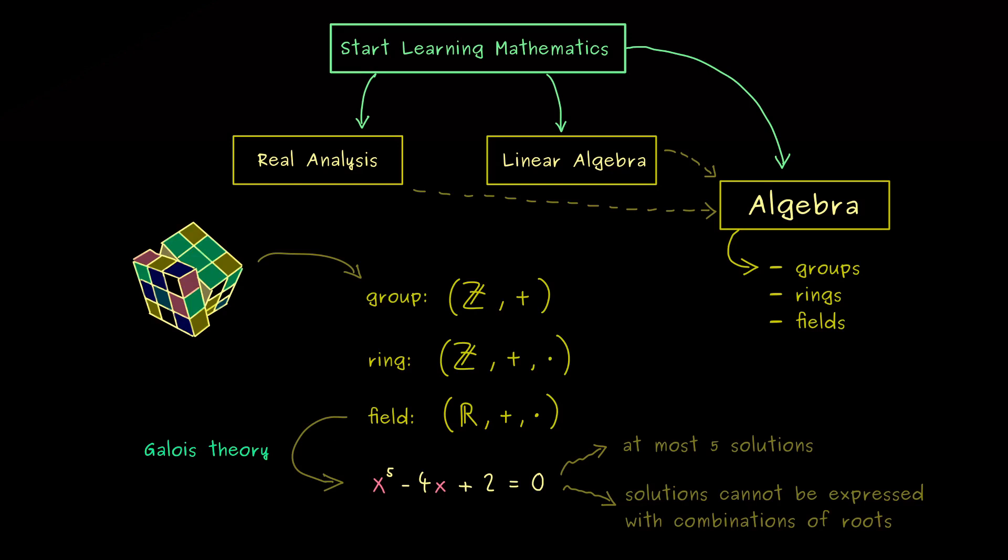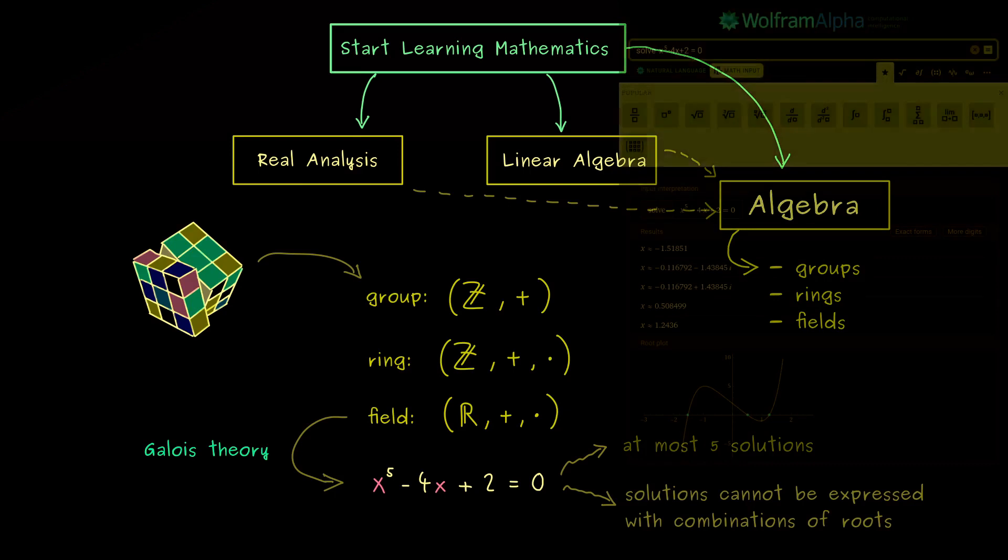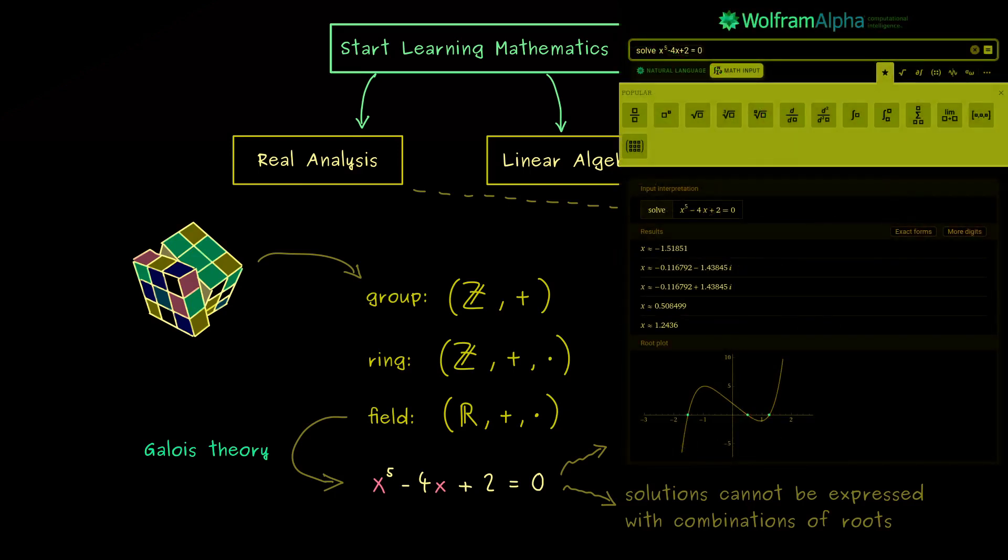Now in order to check this interesting fact, let's put this particular equation into Wolfram Alpha. And there we see Wolfram Alpha is not able to give more than just an approximation of the solutions. And indeed, we also see the graph of this polynomial is given here, and we have only 3 real solutions.